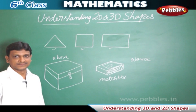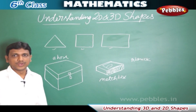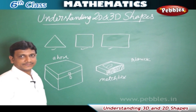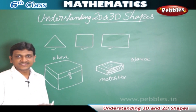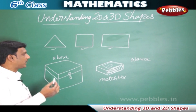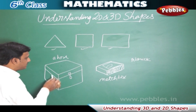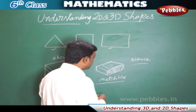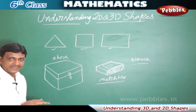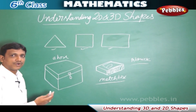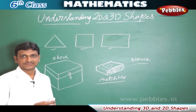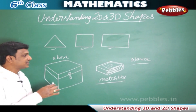Understanding 2D and 3D shapes. In the previous chapters you have learned about basic geometrical shapes like triangle, square, rectangle, and so on. These shapes are 2D shapes, meaning they have only two dimensions: length and breadth. If you look at solid objects like a box, a matchbox, or a brick, these have three dimensions: length, breadth, and height or depth. Shapes with three dimensions are called three-dimensional or 3D shapes.